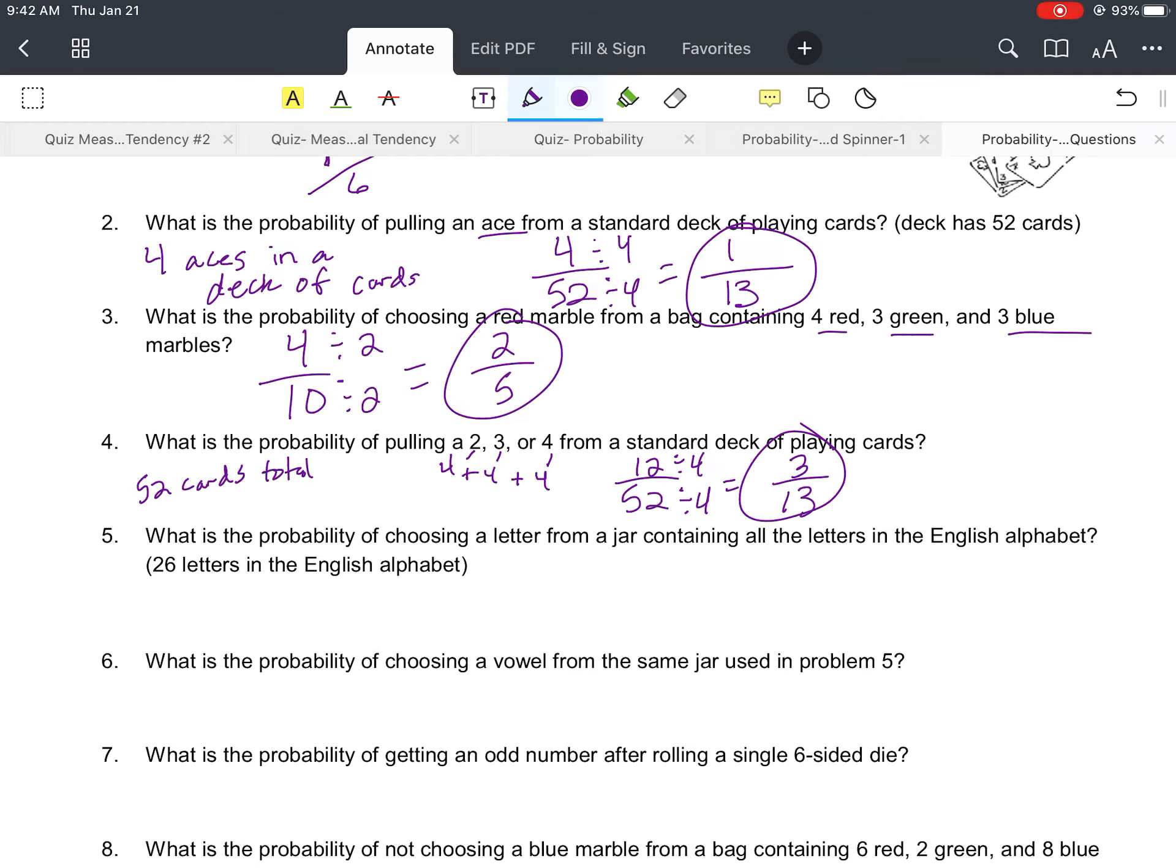Number five, it says what is the probability of choosing a letter from a jar containing all the letters in the English alphabet? And so if you were to count up the letters in the English alphabet from A to Z, there's a total of 26 letters. Okay, so with there being 26 letters, that would have to be our denominator. And again, it says what is the probability of choosing a letter from a jar containing all the letters?